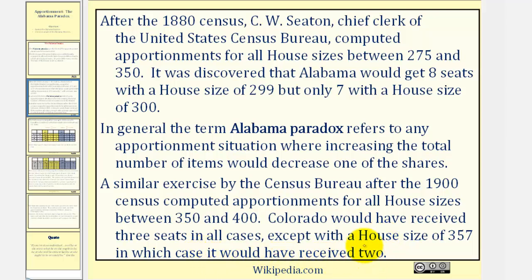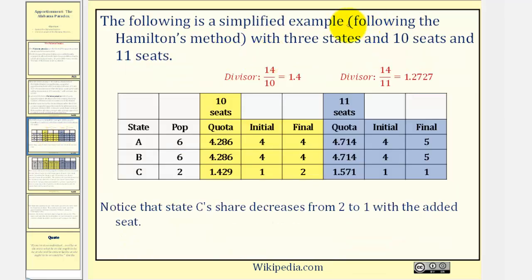Let's take a look at a more detailed example. Here we'll use Hamilton's method to apportion 10 seats and then 11 seats among three states. Looking at the table below, notice how the total population would be 6 plus 6 plus 2 or 14, and therefore when there are 10 seats, the standard divisor would be 14 divided by 10, or 1.4. And when there are 11 seats, the standard divisor would be 14 divided by 11, or approximately 1.2727.